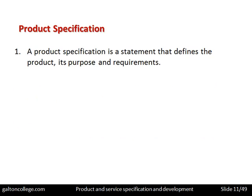A product specification is a statement that defines the product, its purpose, and requirements. The specification should clearly set out what the product is, what its purpose is, what it does, and what is required to make it. The product specification is the result of the research activity — working customer feedback into a specification covering design, functionality, services rendered, purpose, and what's needed to make it.